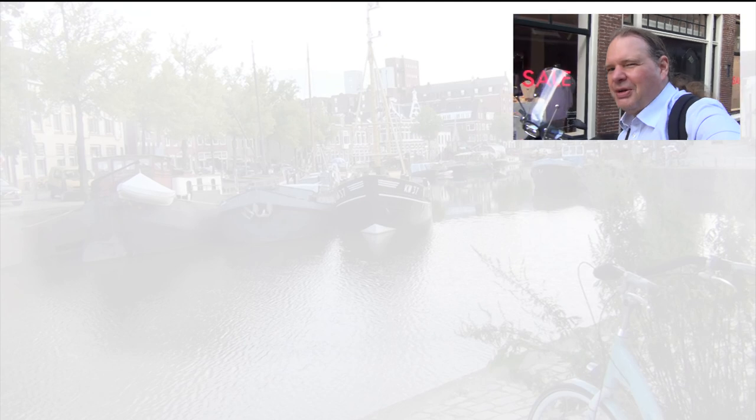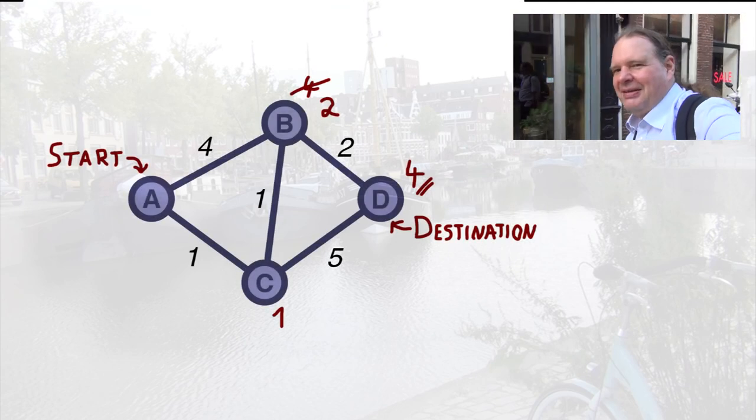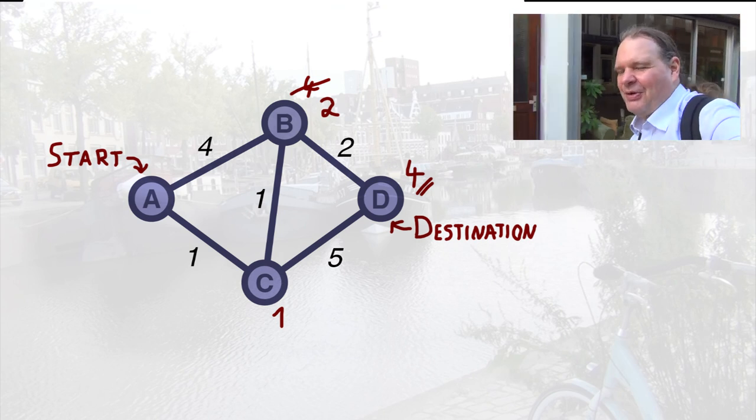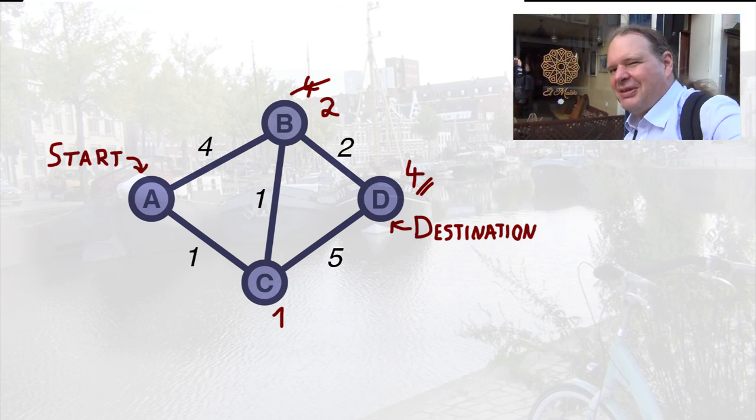Does this remind you of anything? In the first lecture we said that if you have a problem subject to a structural constraint and an optimality constraint, it's usually a good idea to first relax the structural constraint and then slowly bring it back. We are looking for paths that lead to our destination — that is a structural constraint — and we want these paths to be the shortest ones, which is an optimality constraint. We solved the small problem by first relaxing the structural constraint, finding optimal paths that do not yet lead to the desired destination.